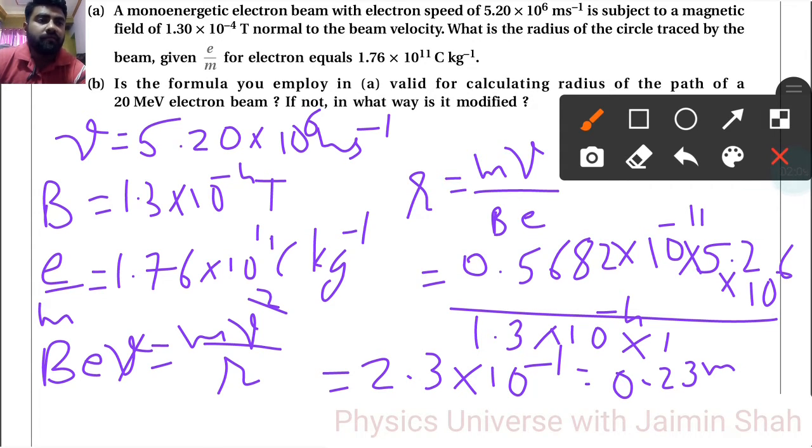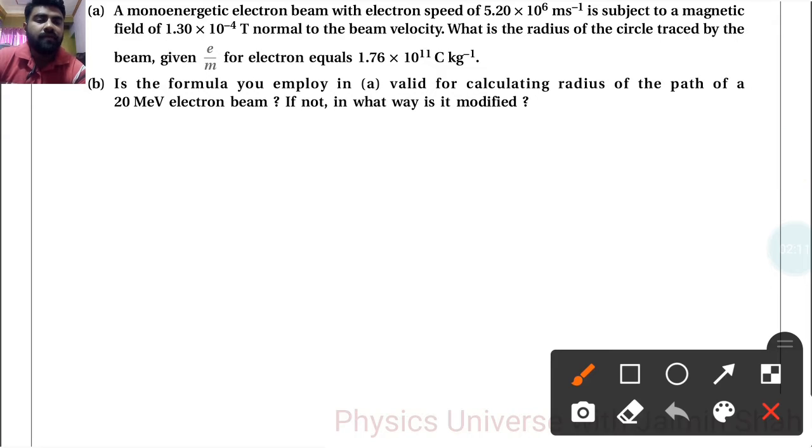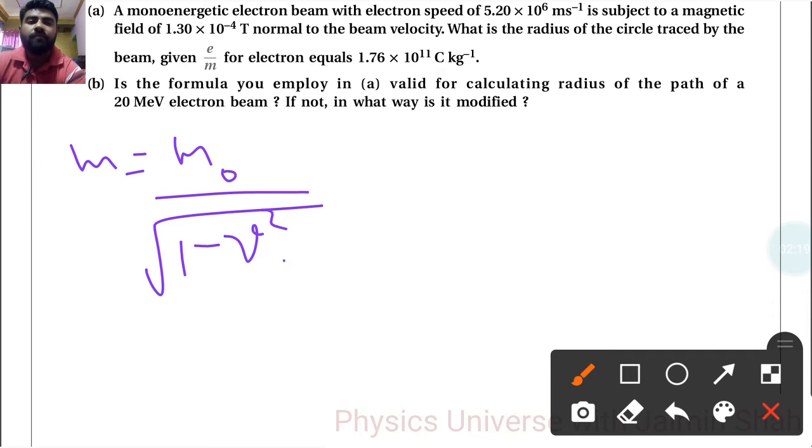I'm writing the modified formula now. We know that M = M₀/√(1 - V²/C²). When speed is very high, we have to use M₀, the rest mass term. That is our formula.